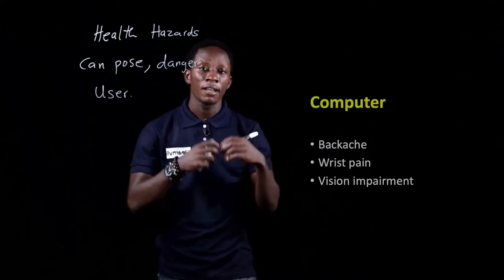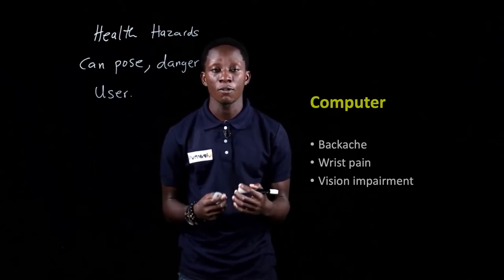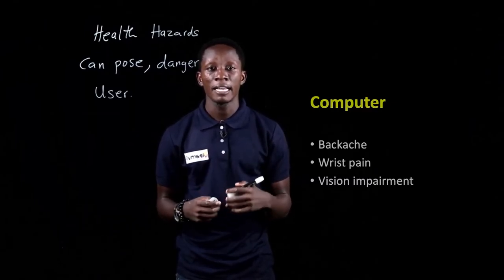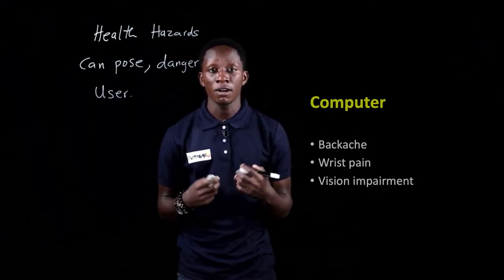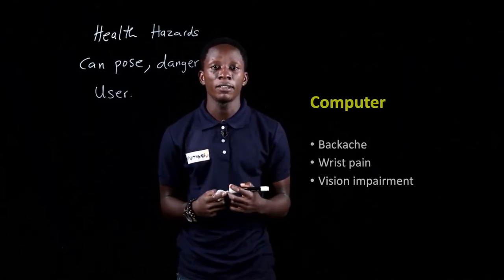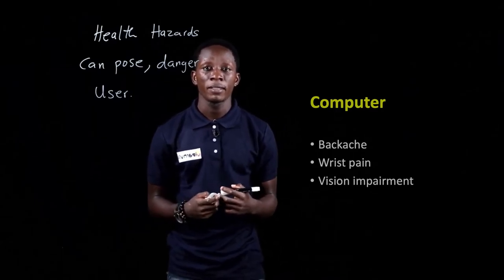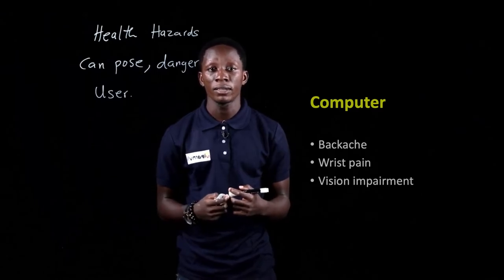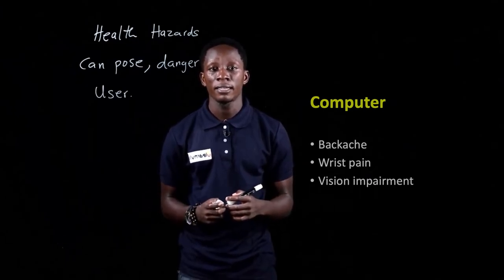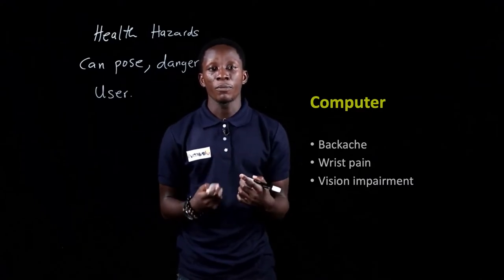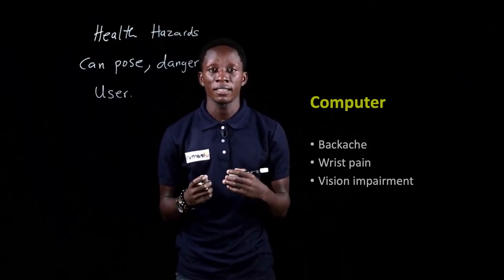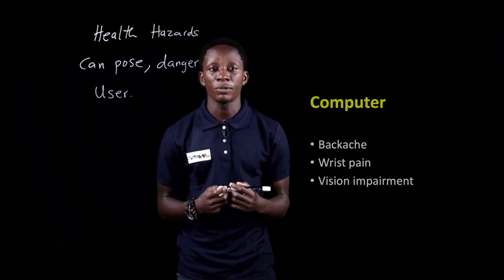The computer requires a proper posture when you sit behind it, or else you get back ache, wrist pain, and also vision impairment when you get too close whilst using it. With back ache, if you don't position yourself well on the chair, your back is really going to pain you. With wrist pain, it deals with the input devices — the keyboard and the mouse — and you should be able to raise your arms properly on them. The computer also has its own light; you need to decrease the brightness or stay a little bit away from the screen when using it.